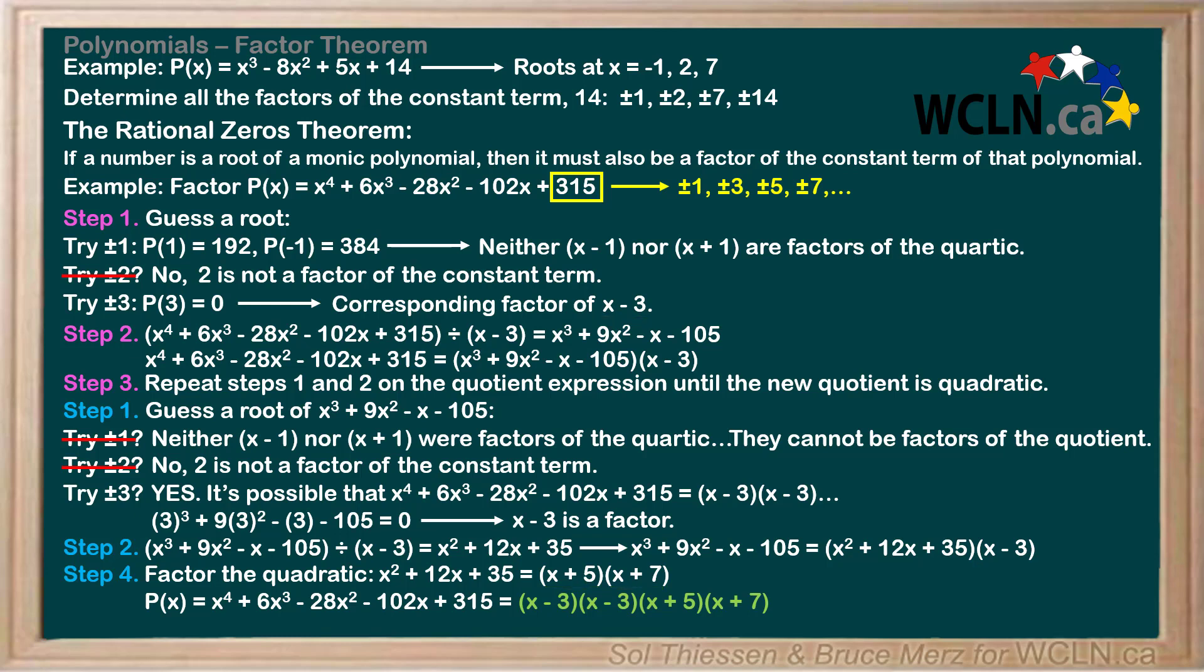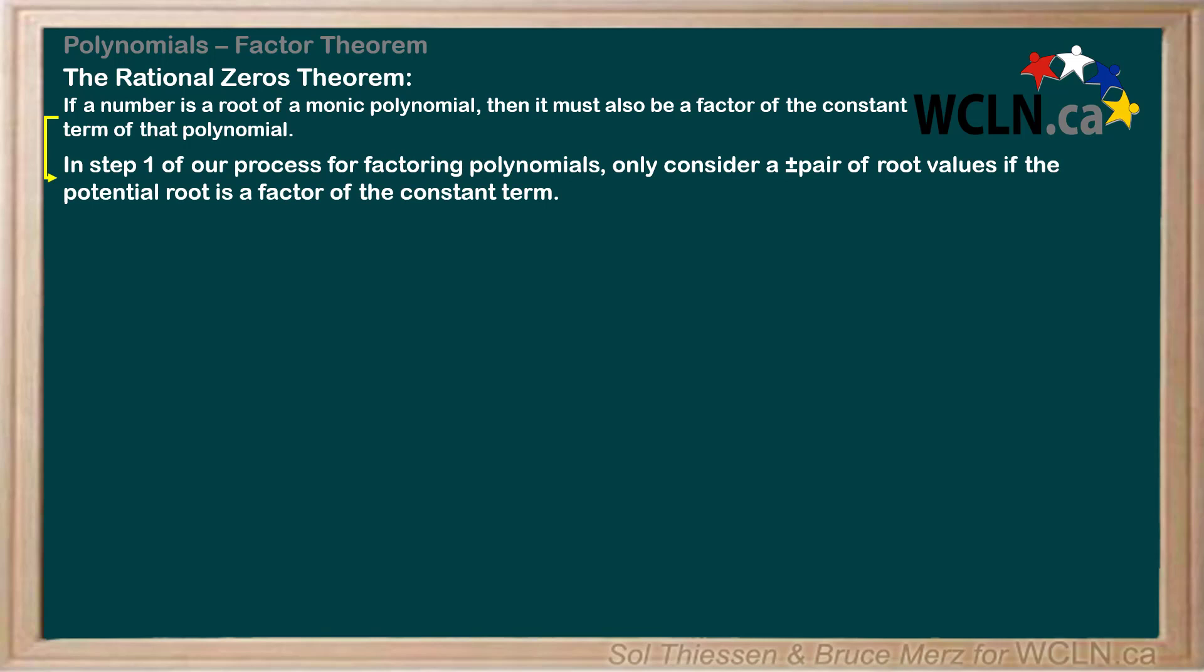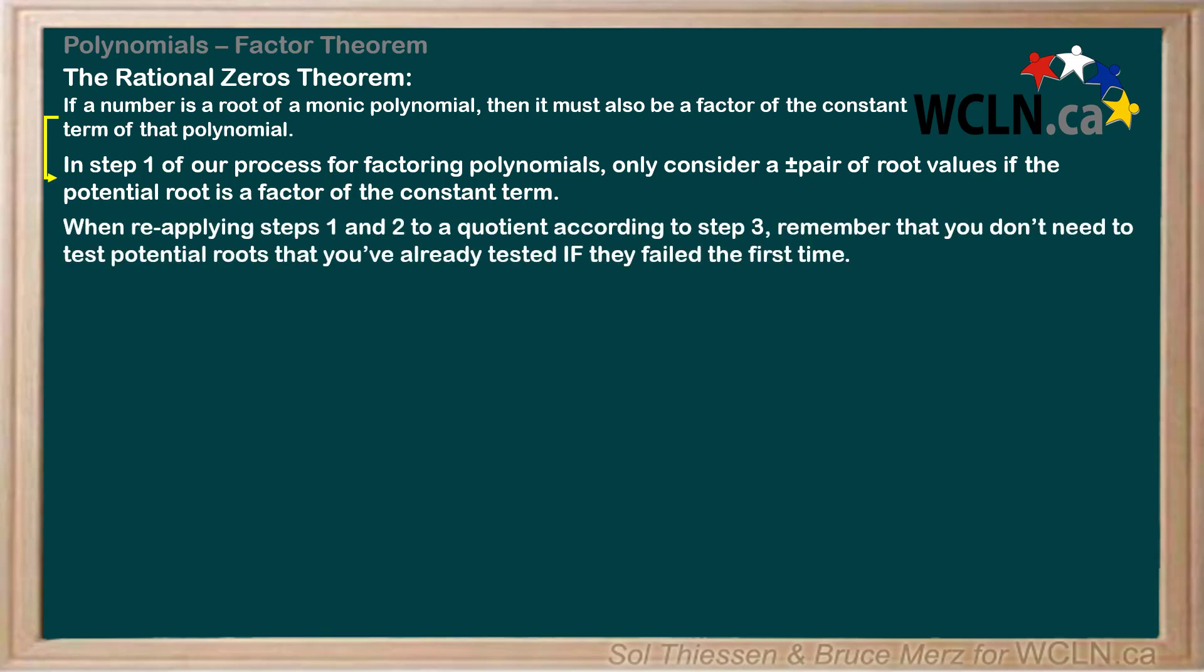Feel free to pause the video and look over what we've done before I summarize the main points for you on the next slide. What I want you to take away from this video is the rational zeros theorem. If a number is a root of a monic polynomial, then it must also be a factor of the constant term of that polynomial. This means that in step 1 of our process for factoring polynomials, only consider a plus or minus pair of root values if the potential root is a factor of the constant term.